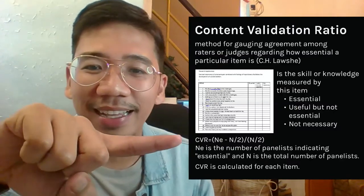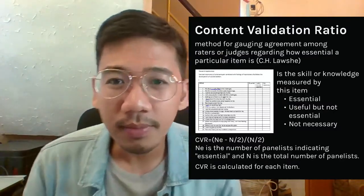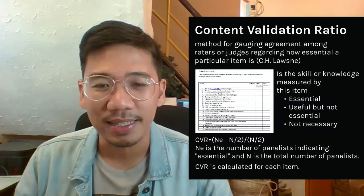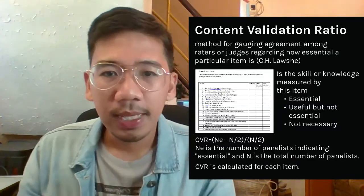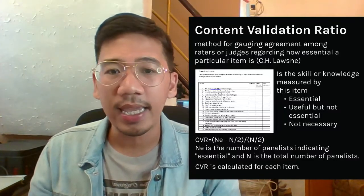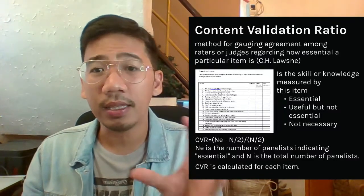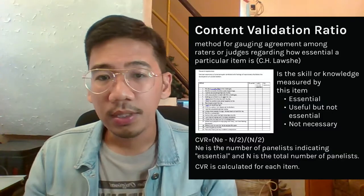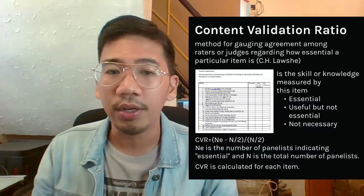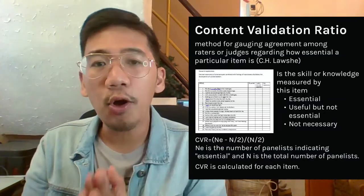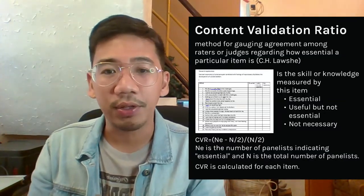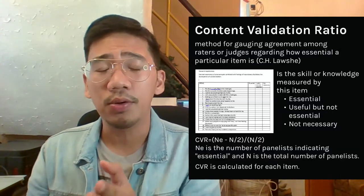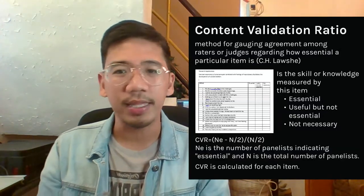After the validators have determined what is essential, useful but not essential, or not necessary, you compute the Content Validation Ratio. There is a formula for this. For the purposes of our lesson, you do not have to memorize the formula — it can be done easily in SPSS. In the formula, NE is the number of panelists indicating that a particular item is essential, and N is the total number of panelists. The CVR is calculated for each item.